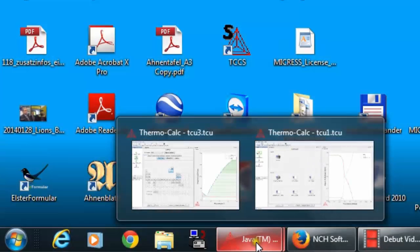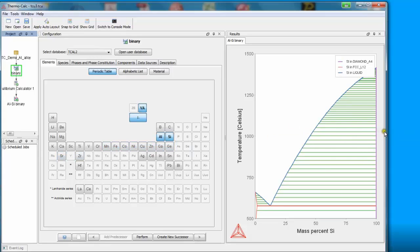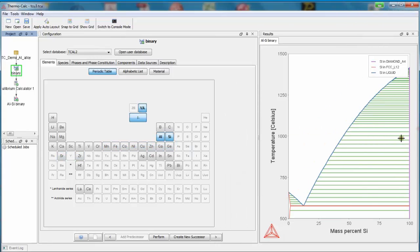This is why nowadays such kind of phase diagrams can be easily calculated using suitable thermodynamic software. Just by entering the two elements and using a suitable database, a short calculation setup allows us to generate these kinds of binary phase diagrams.